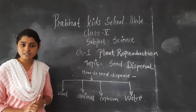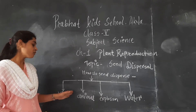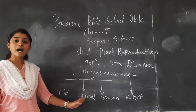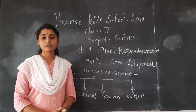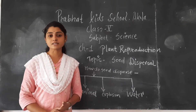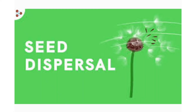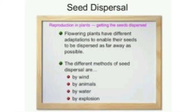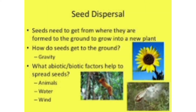How do seeds disperse? Seeds disperse by four mediums. First is wind, animal, explosion, and water. Flowering plants have different adaptations to enable seeds to be dispersed as far away as possible. Some methods of seed dispersal are dispersal by wind, dispersal by water, dispersal by explosion, and dispersal by animals.